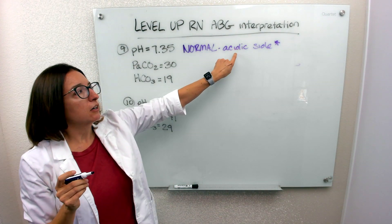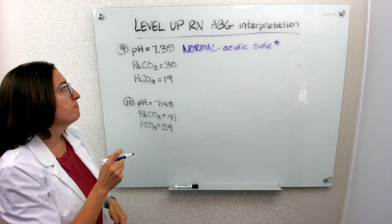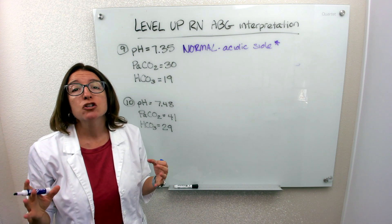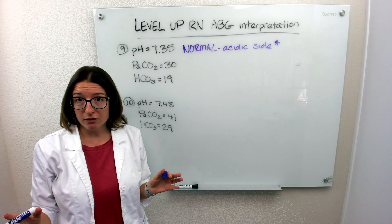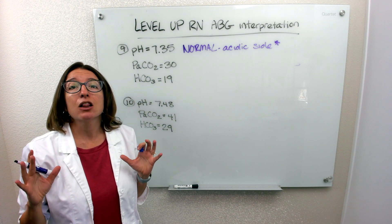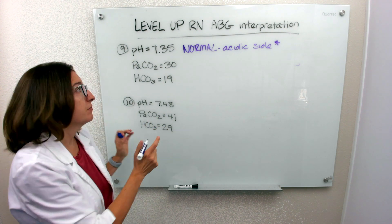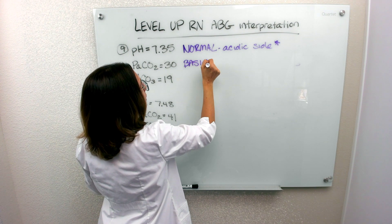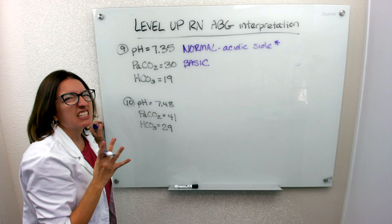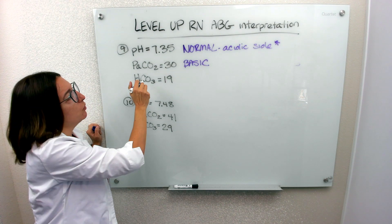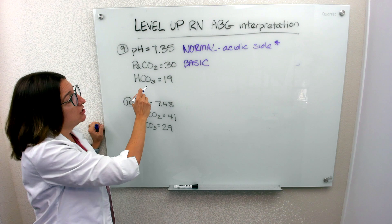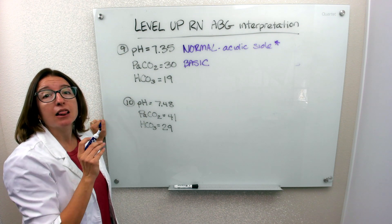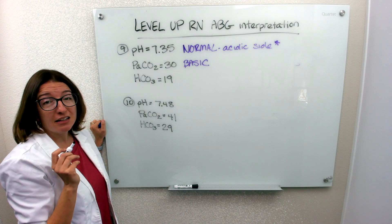So let's see who may be contributing to that acidosis. PaCO2 is 30, which should be between 35 and 45. So it is low, on the basic side. So we know that's not really responsible for the slight acidosis. But let's see what the metabolic system is doing. HCO3 should be between 22 and 26, but it is low on the acidic side.